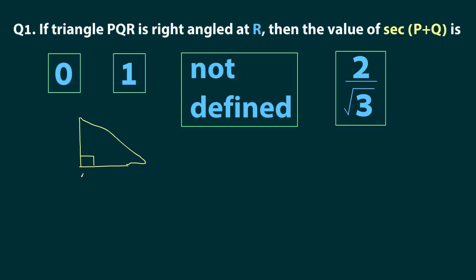And our triangle is right angled at R. So this is R. Let's say this is P, this is Q. It does not really matter. We could have switched them as well.